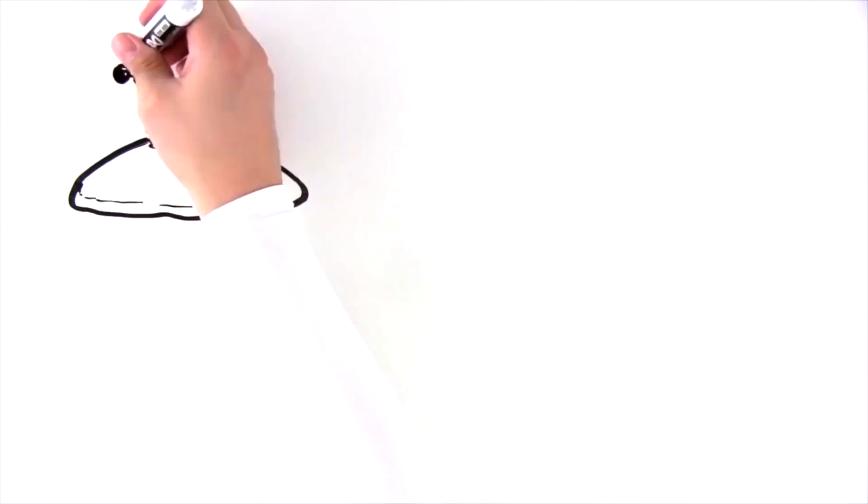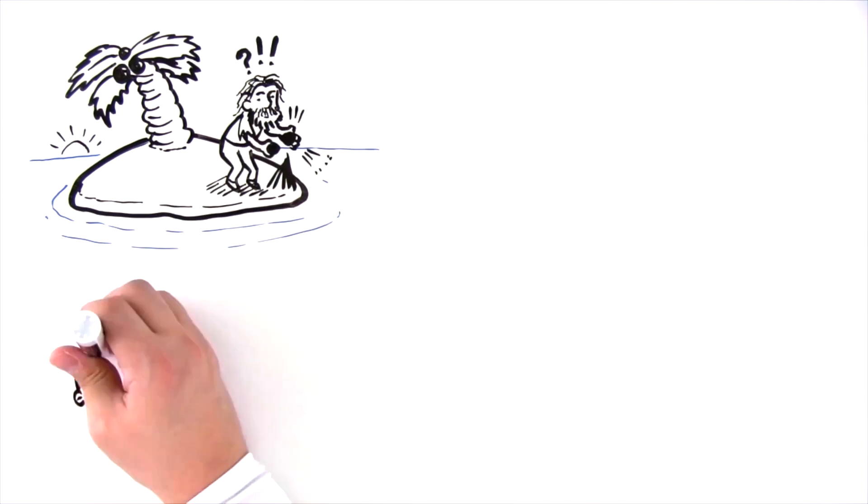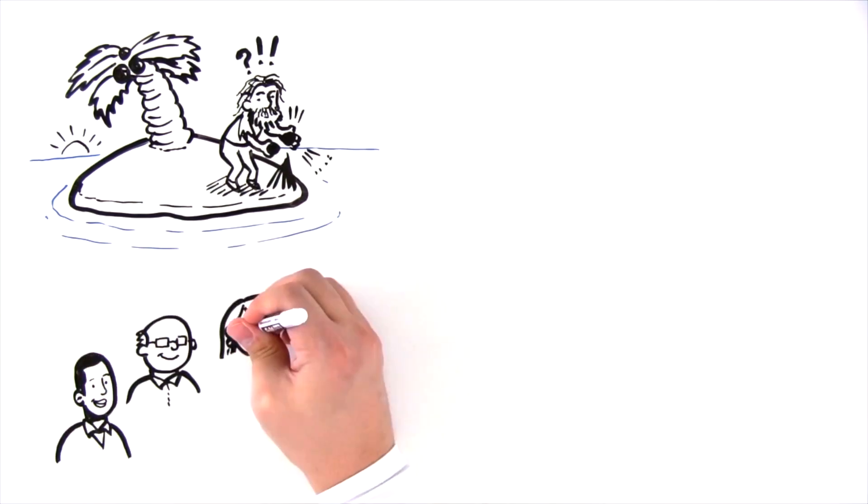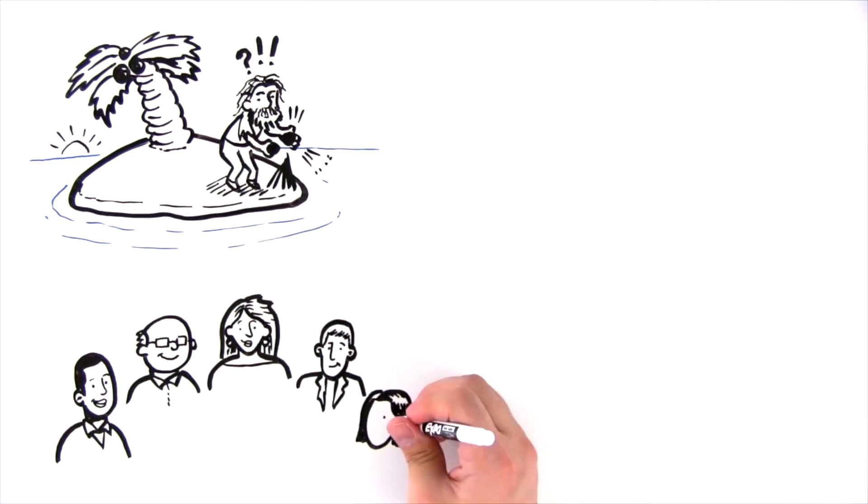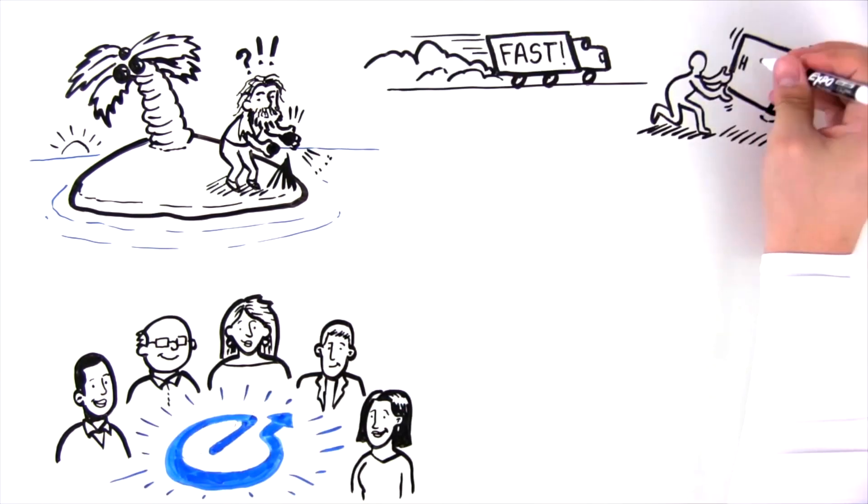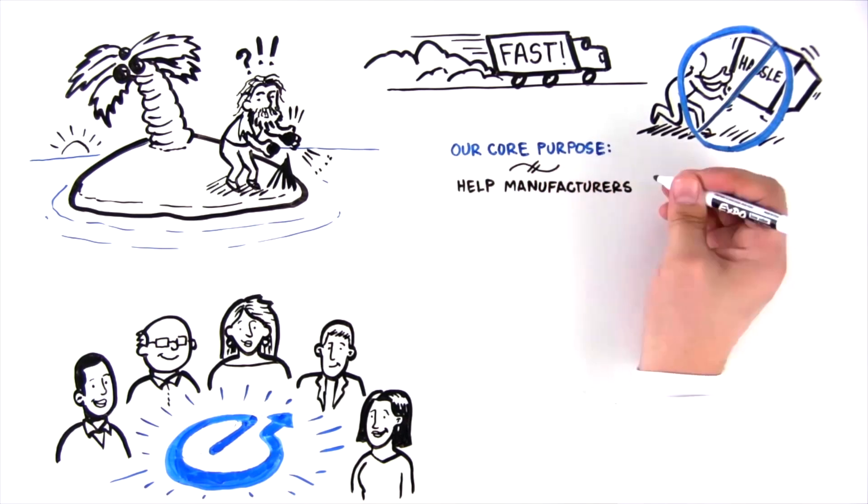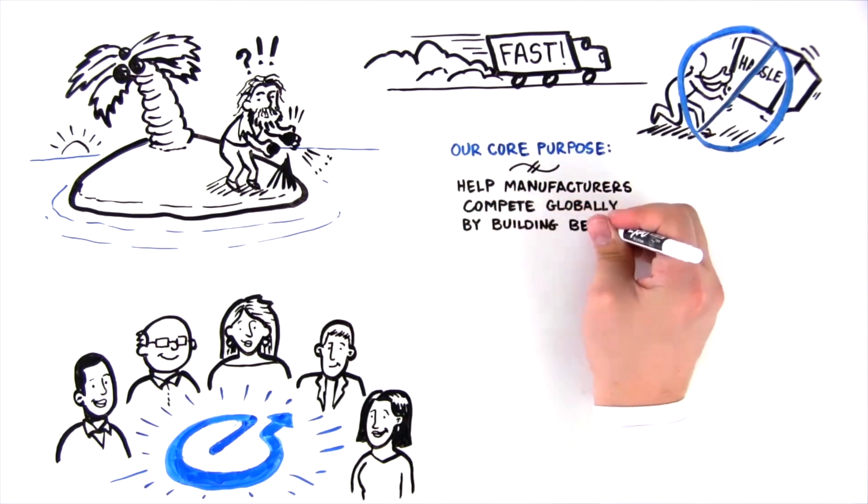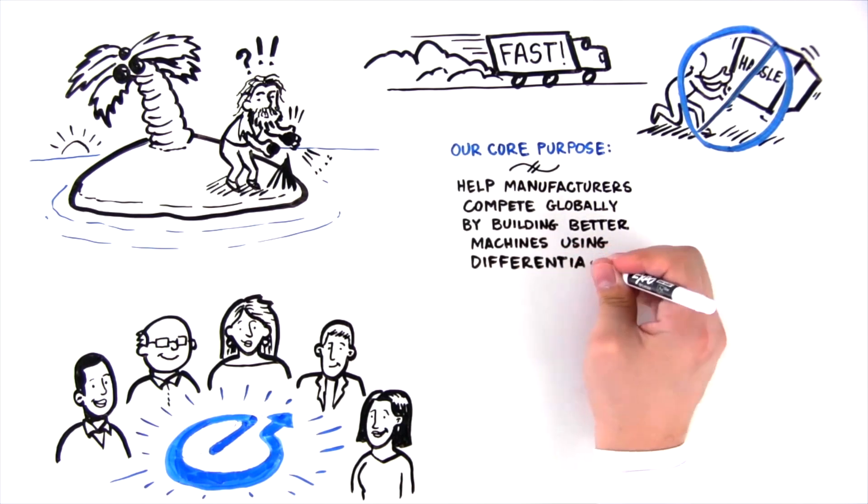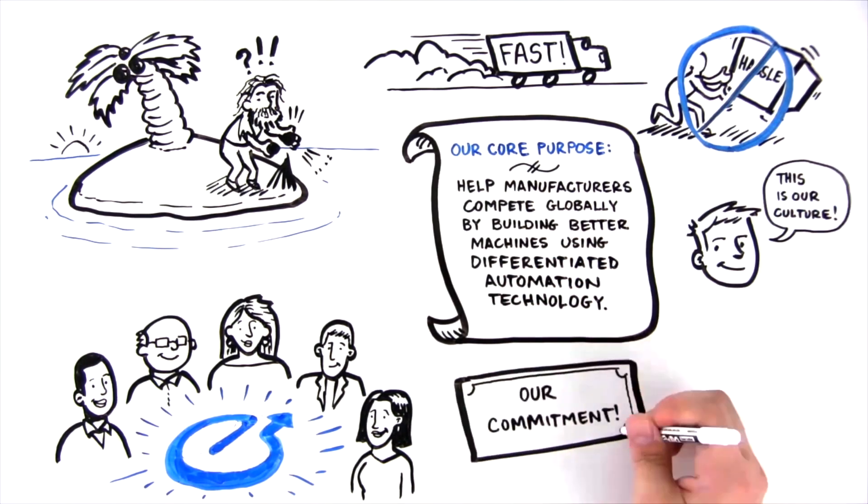No business is an island. There's no need to fend for yourself. Utilize ElectroMate's engineering expertise to complement your engineering team and get your product to market faster with less hassle. Our core purpose is to help manufacturers compete globally by building better machines using differentiated automation technology. This is our culture. This is our commitment to you.